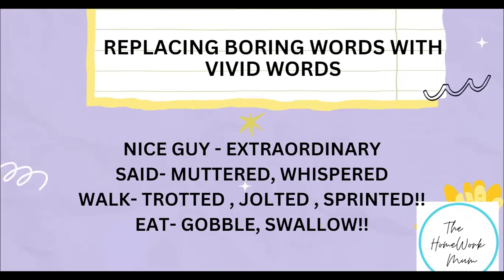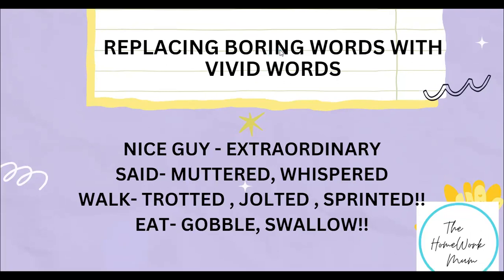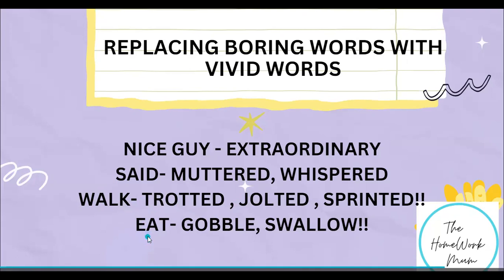Take 'walk' — a lot of times we say the character walked down the street, but if we describe exactly how he walked, we'd say he trotted, jolted, or sprinted. Pay attention to tense: if it's 'walked,' it should be 'trotted'; if it's 'walk,' use 'trot,' 'jolt,' 'sprint.' Similarly, 'eat' can become 'gobble' or 'swallow.' If you want more such synonyms, use this Banish Boring Words book. I'll show you how while we edit.